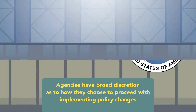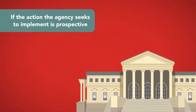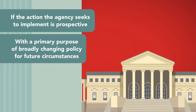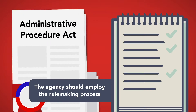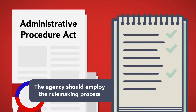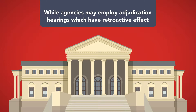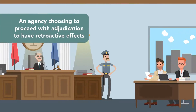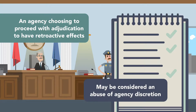Agencies have broad discretion as to how they choose to proceed with implementing policy changes. However, the courts have imposed some limits to agency discretion. First, if the action the agency seeks to implement is prospective, with a primary purpose of broadly changing policy for future circumstances, the agency should not operate through adjudication. Instead, the agency should employ the rulemaking process, with all the procedural protections the APA requires for making new rules. While agencies may employ adjudication hearings which have retroactive effect, courts have limited this discretion and may overturn the results of an agency adjudication if retroactive application of the policy would have serious adverse consequences.